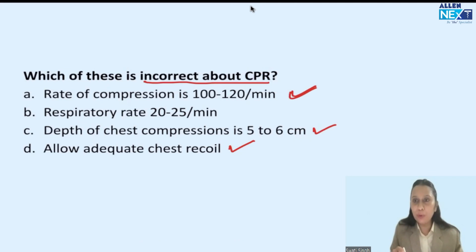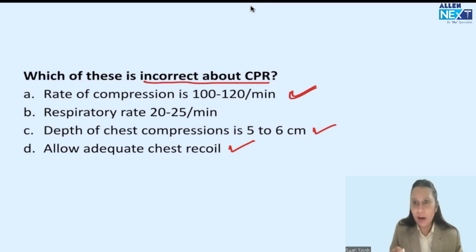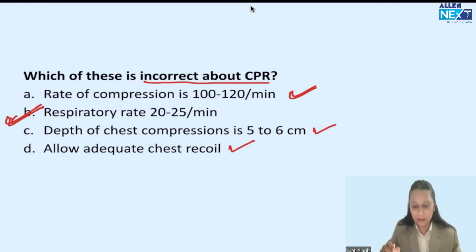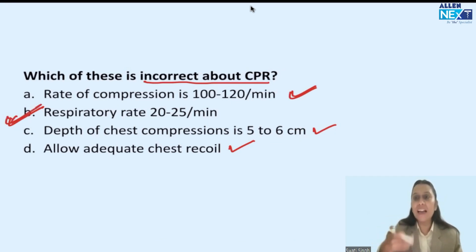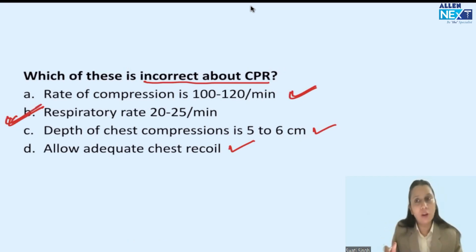A respiratory rate of 20 to 25 is not part of high quality chest compression — this is incorrect. A high respiratory rate increases abdominal pressure, aspiration can happen, and it decreases venous return so perfusion will not be maintained. So the answer is: respiratory rate 20 to 25 breaths per minute is wrong.